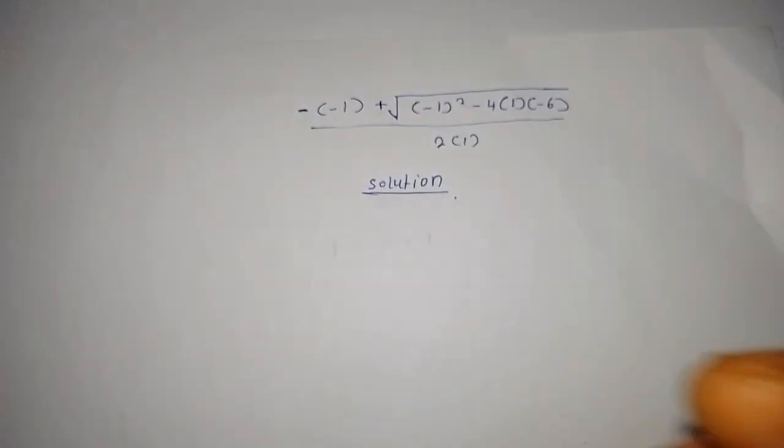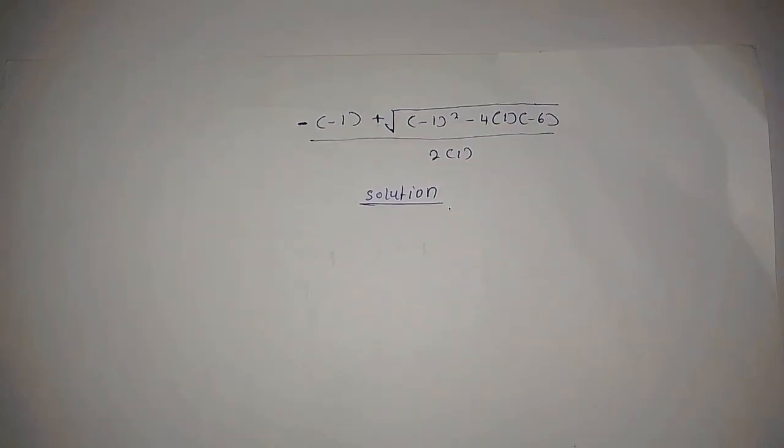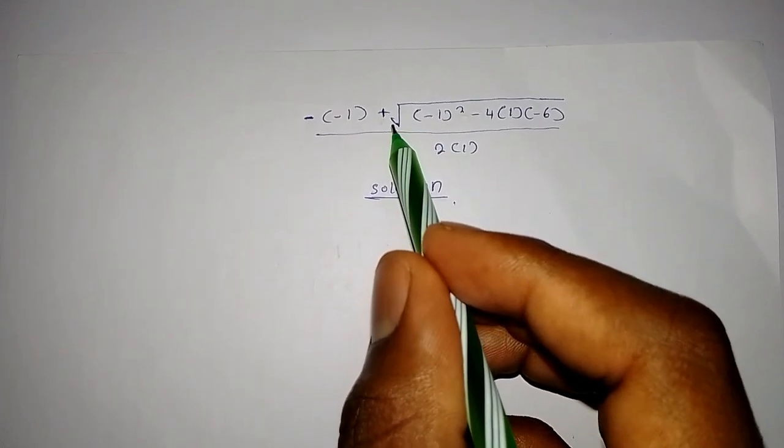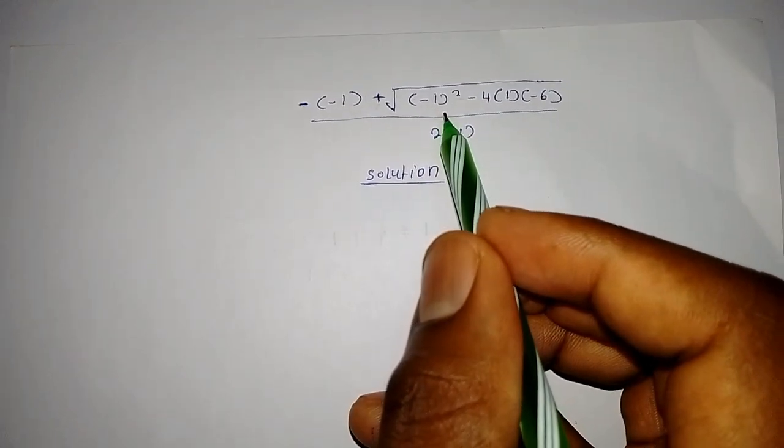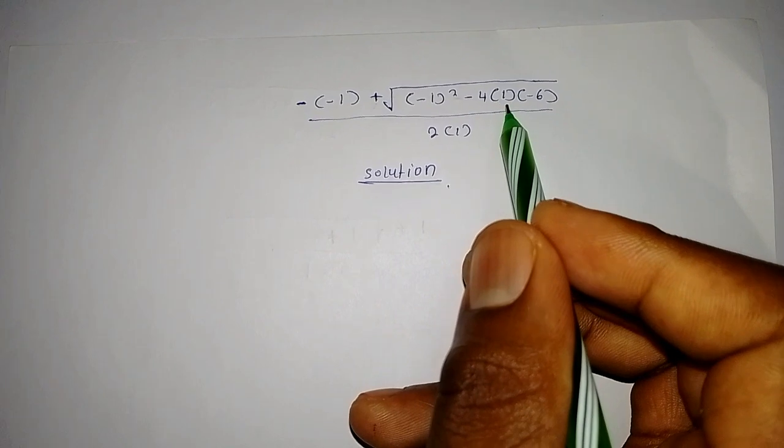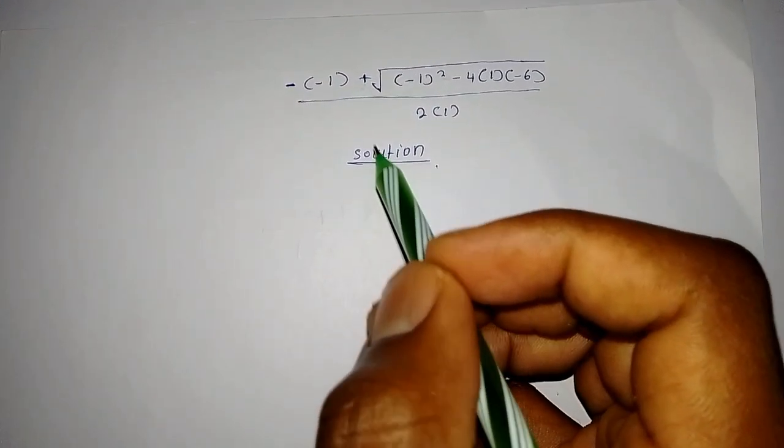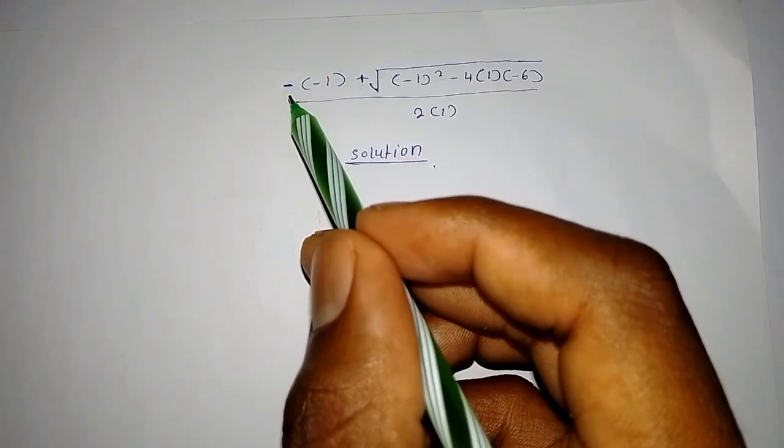I'm having an amazing math question here whereby you are given negative 1 plus the root of negative 1 squared minus 4 into 1 into negative 6, and you have to know that the sign of a negative multiply by a negative will result to a positive.